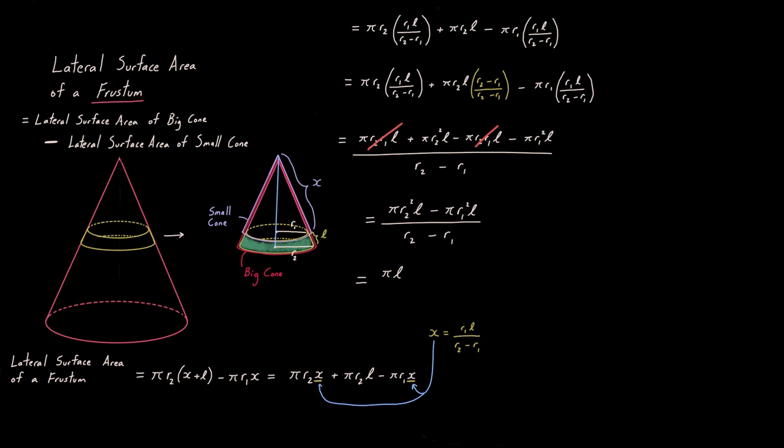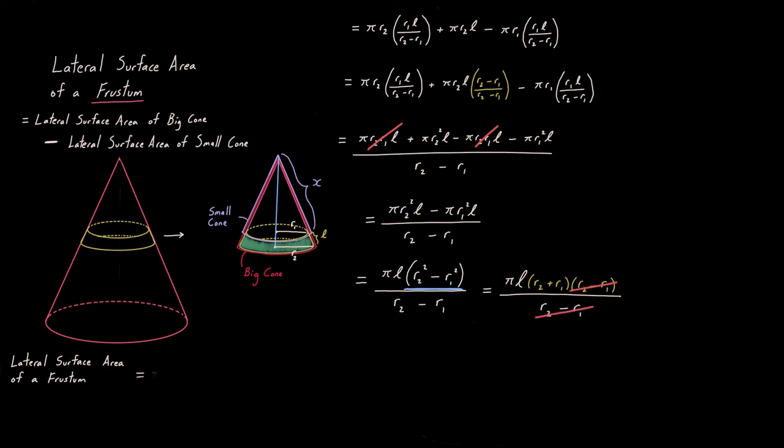Still looks like kind of a mess, but notice I can pull out a πL, leaving me with a difference of squares, and when we see difference of squares, we immediately know that that thing is factorable. And aha, when I factor, some stuff is going to cancel, top and bottom, I'm left with an expression for the lateral surface area of a frustum, just in terms of those three quantities, R1, R2, and L. There it is.